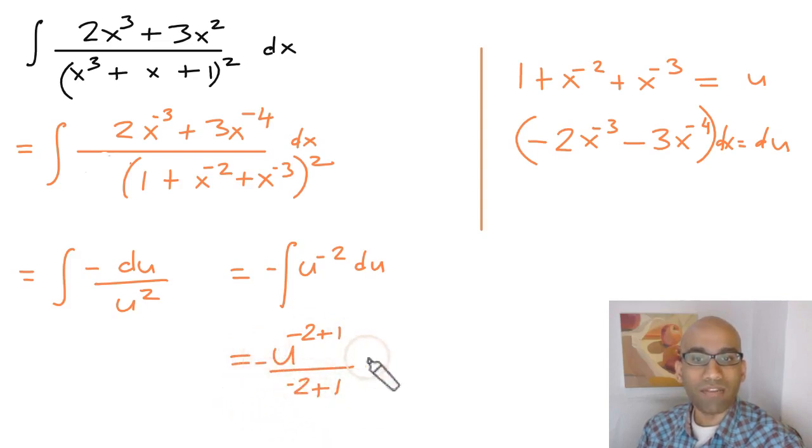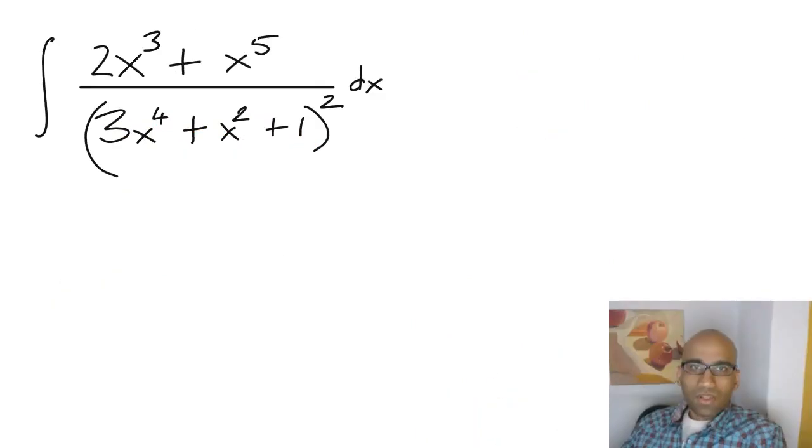So this is negative, so you get negative 1. Negative of negative 1 is going to be plus 1, and so your answer is just going to be u power minus 1. And then you can substitute this value back inside to get your final answer.